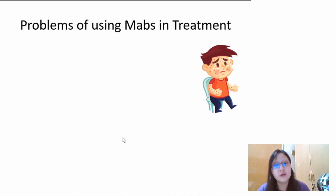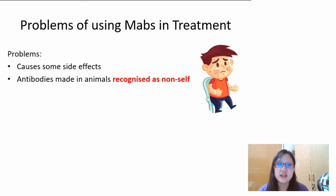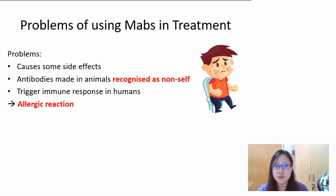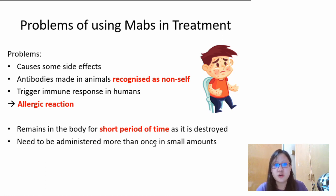Monoclonal antibodies are cheap, safe, fast, easy to use, and quite accurate — but it is not a perfect treatment. The problem is that antibodies made in animals like mice can be recognised as non-self; your body knows whether the antibody belongs to you or not. This triggers an immune response in humans, which is what we call an allergic reaction. Another problem is that it remains in the body for a short period of time, as it is destroyed because it's recognised as non-self. So if you are under monoclonal antibody treatment, the antibody needs to be administered more than once in very small amounts to prevent side effects and maintain it in the bloodstream longer.